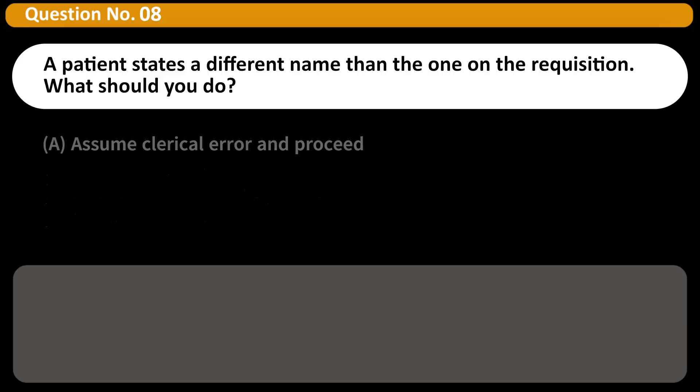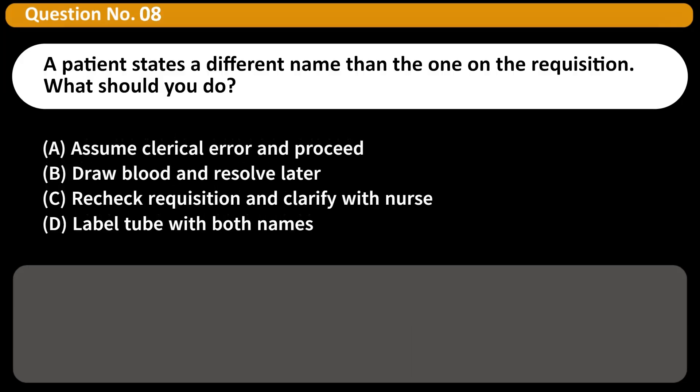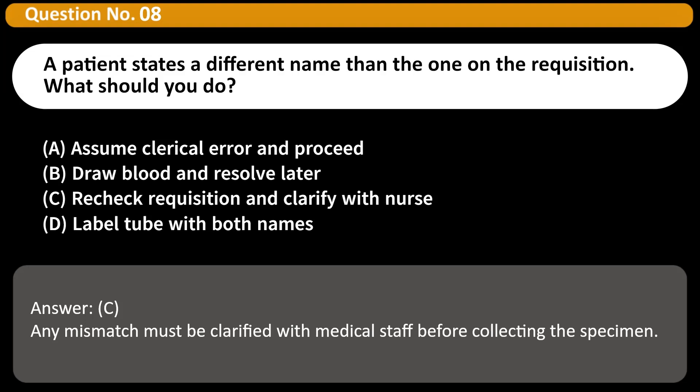A patient states a different name than the one on the requisition. What should you do? A. Assume clerical error and proceed. B. Draw blood and resolve later. C. Recheck requisition and clarify with nurse. D. Label tube with both names. Answer: C. Any mismatch must be clarified with medical staff before collecting the specimen.